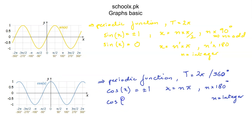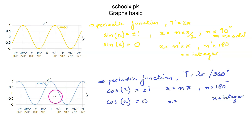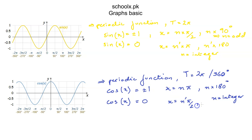Cosine of x is 0 when x is π/2, 3π/2, negative π/2, and negative 3π/2. So cosine of x equals 0 when x equals n·π/2 or n·90 degrees, where n is an odd integer.